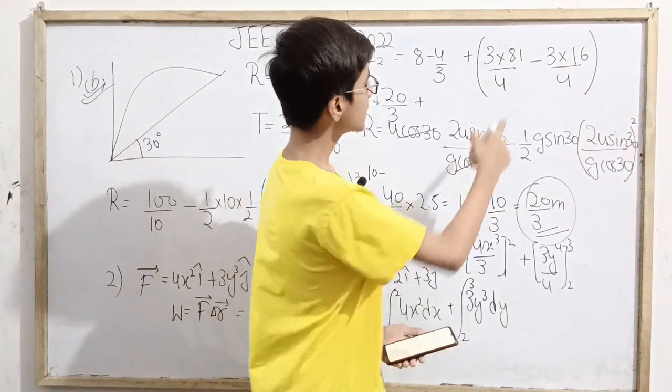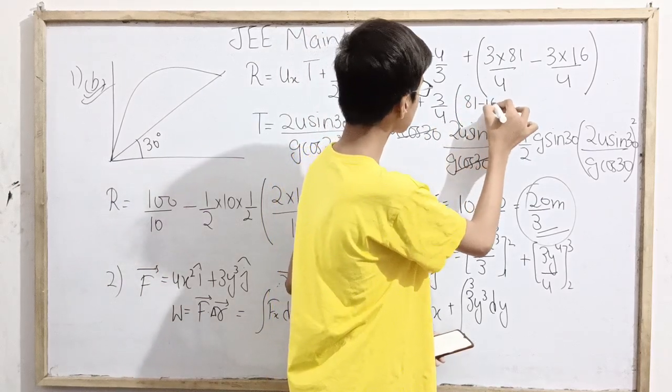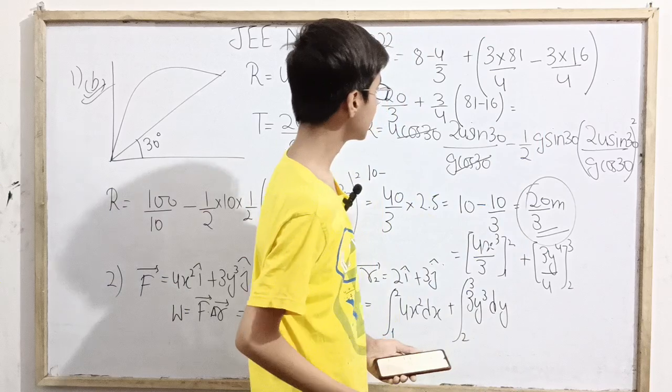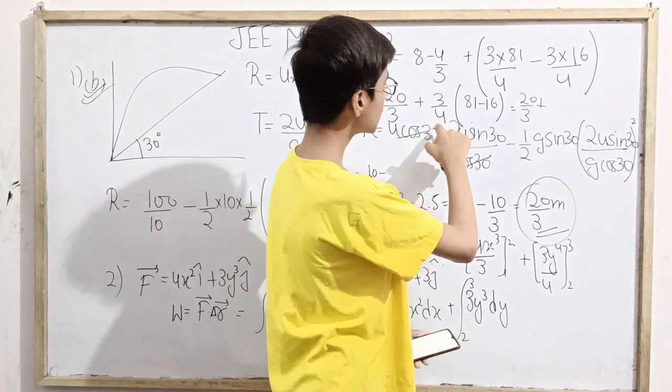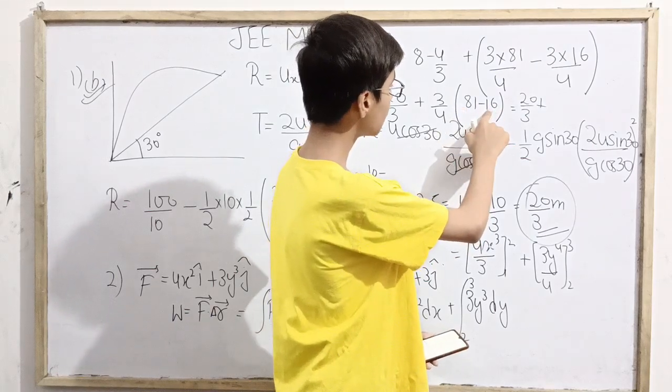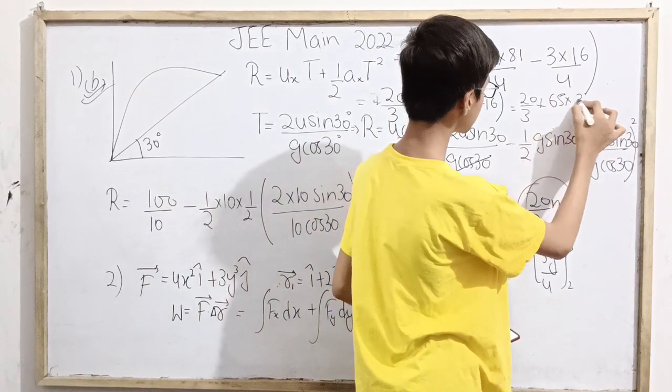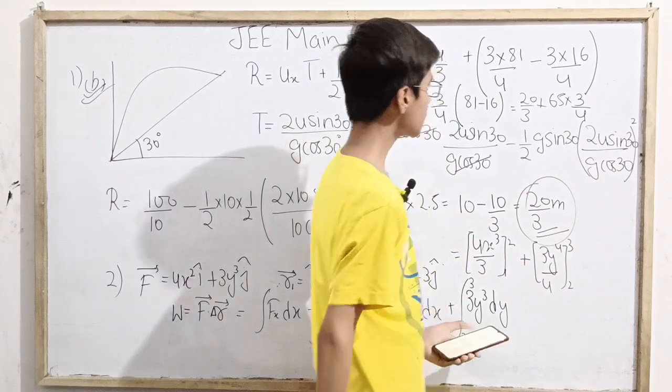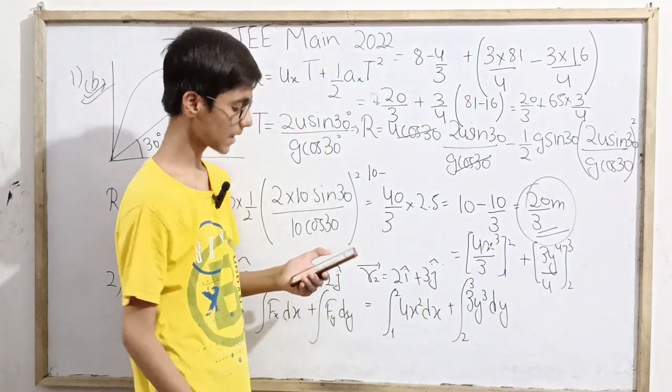This becomes simply 8 minus 4 over 3. That's 24 minus 4, which is 20 over 3. Plus 3 into 81 over 4 minus 3 into 16 over 4. Taking 3 over 4 out: 81 minus 16. Then things get really easy. 20 by 3 plus 3 over 4 into 81 minus 16, which is 65. So 65 into 3 over 4.